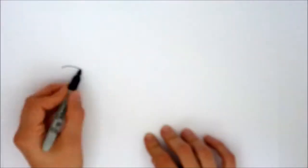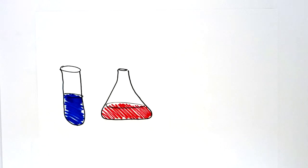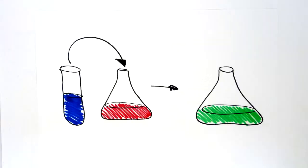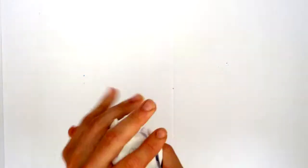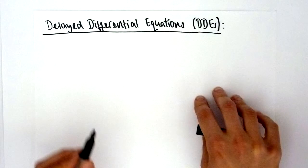With ordinary differential equations, we assume that the reaction to an action is immediate. For example, when I add the blue potion to the red potion, we see an instantaneous change, with t equal to zero. With a delayed differential equation, we are able to introduce a time delay, which is closer to what actually happens in nature.